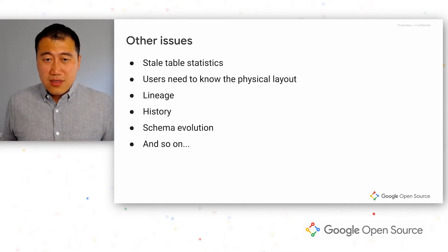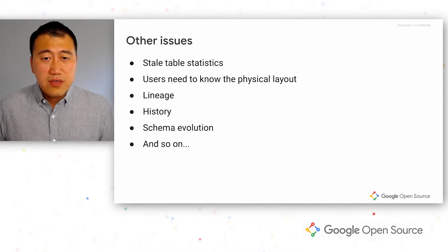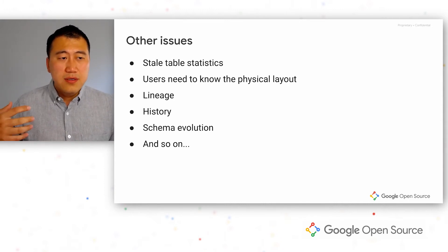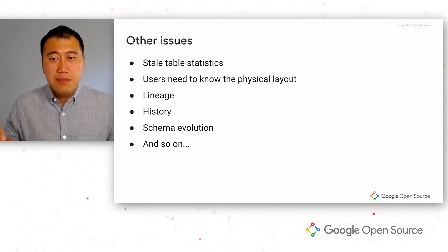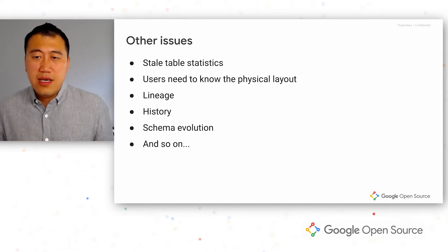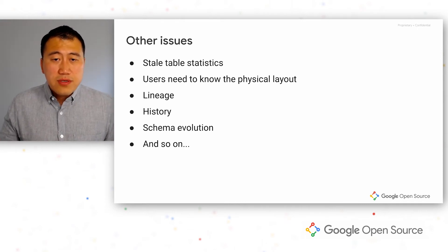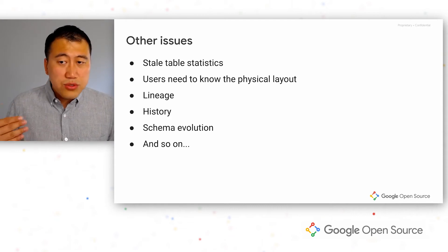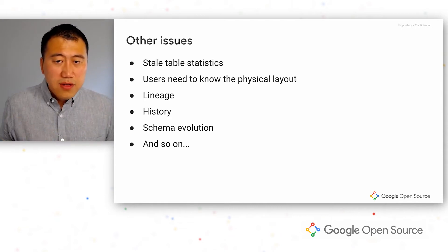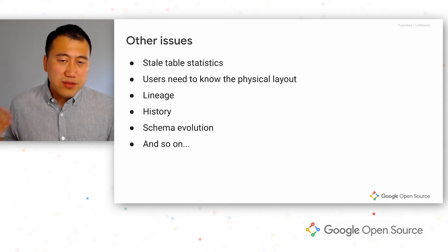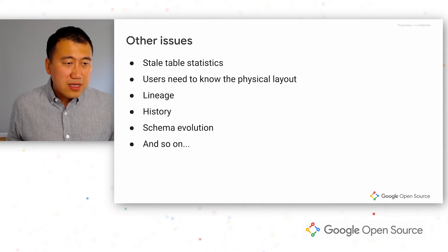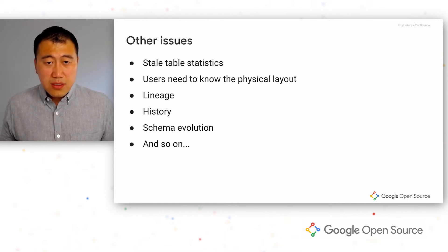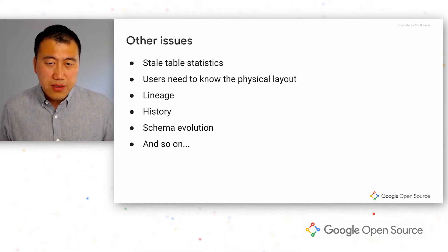Another common pain point is the physical layout. If a table is partitioned by day and hours, a user who doesn't know the physical layout might pass a WHERE filter using a timestamp, which in this case results in a full table scan. Hive also doesn't support things like lineage, history, or schema evolution.